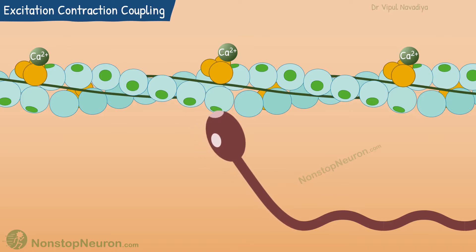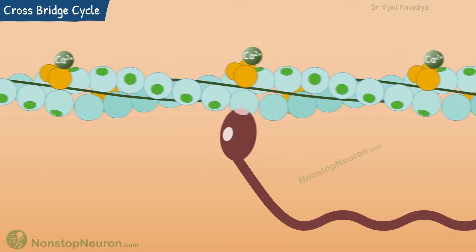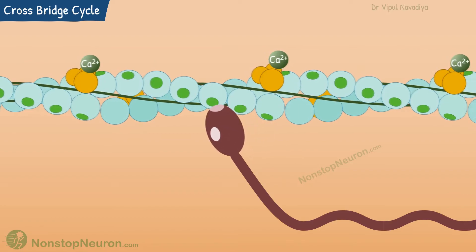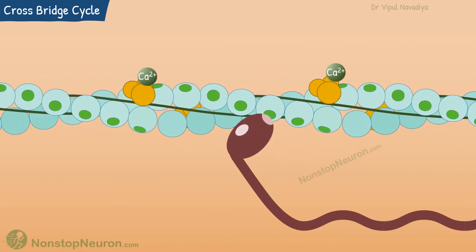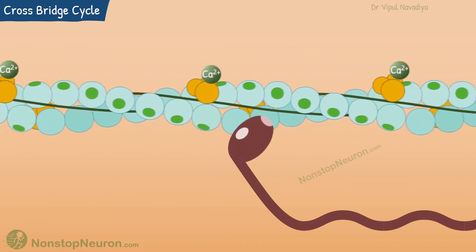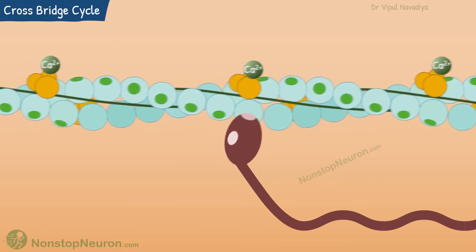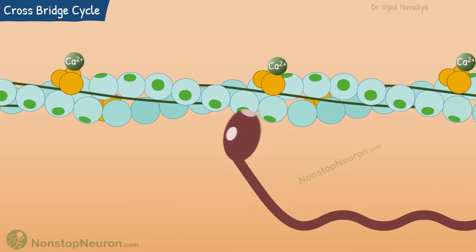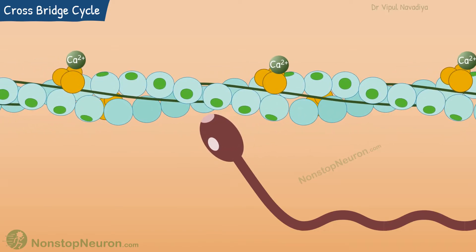This allows myosin to bind and continue the cross-bridge cycle. Basically it is this type of repetitive movement of the myosin head that pulls the thin filaments. We will start with the state of the myosin head just before binding to actin. It is in line with the arm, and at this point it is bound to ADP and a phosphate molecule.